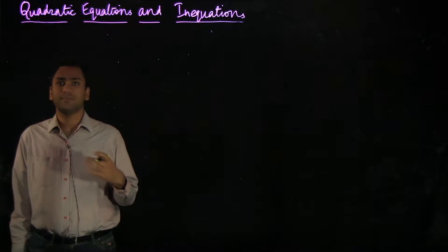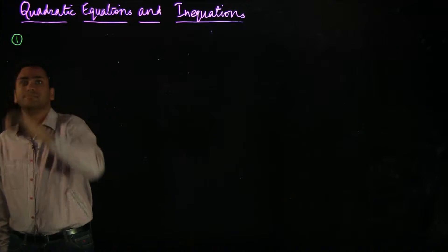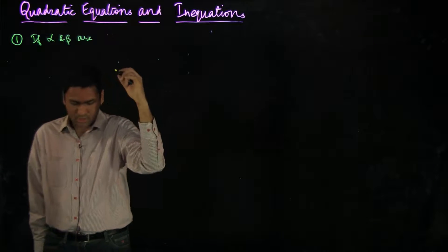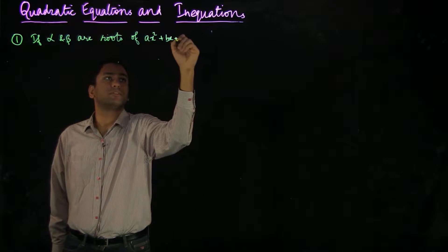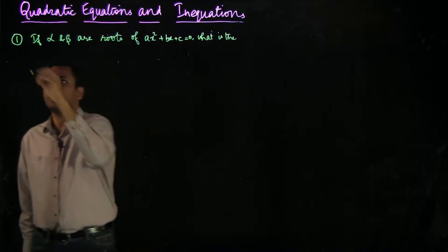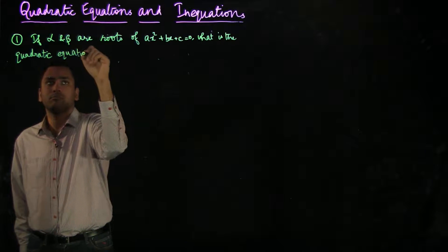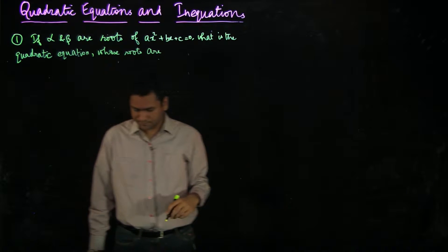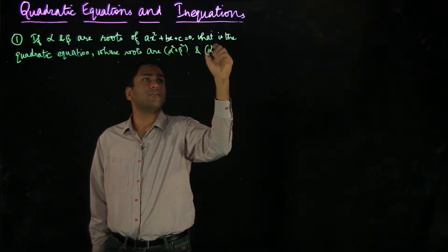Now, we are going to do a few solved examples so we can improve your understanding of the topic. The first question is as follows: if alpha and beta are roots of Ax² + Bx + C = 0, what is the quadratic equation whose roots are alpha squared plus beta squared and alpha cubed plus beta cubed?